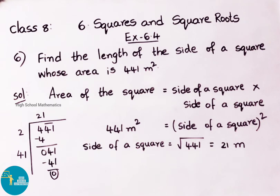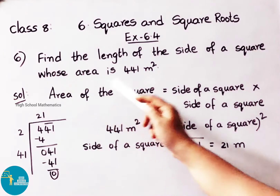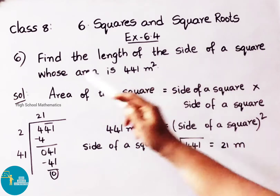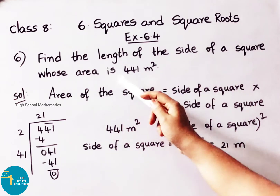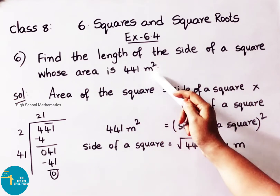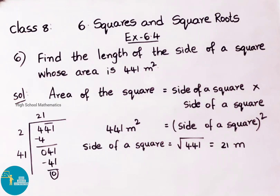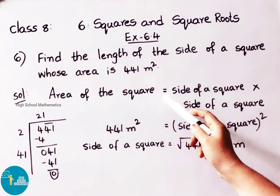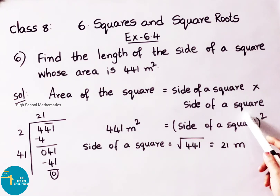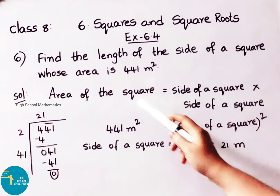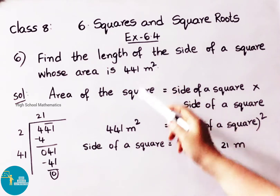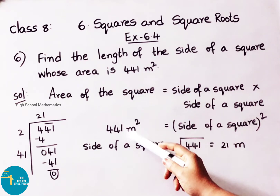See now question number 6: find the length of the side of a square whose area is 441 meter square. Let us see the solution. The area of the square is side × side, and the area is given as 441 meter square.